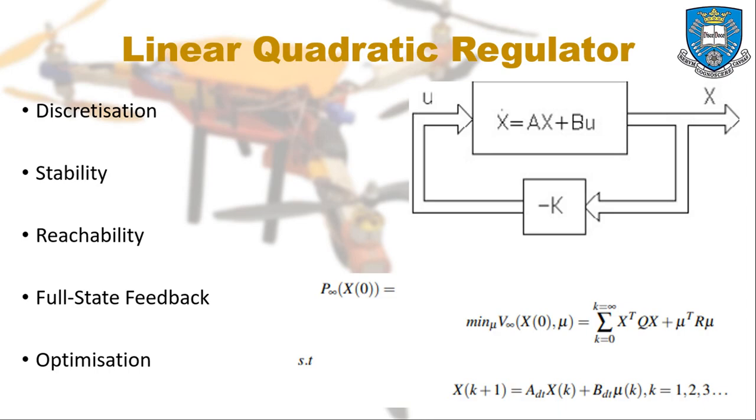A full-state feedback controller is then derived by setting up and solving an optimization problem. The resultant controller is called the Linear Quadratic Regulator. The Linear Quadratic Regulator, or LQR, is then implemented with an integration element to enable reference tracking.